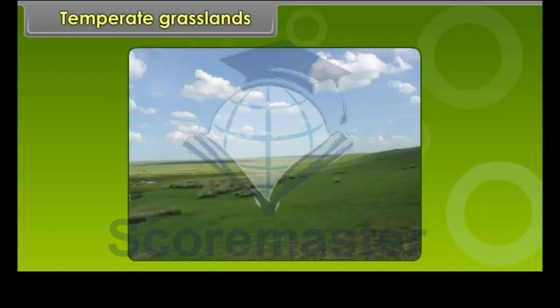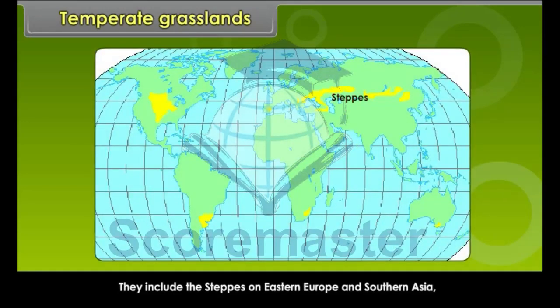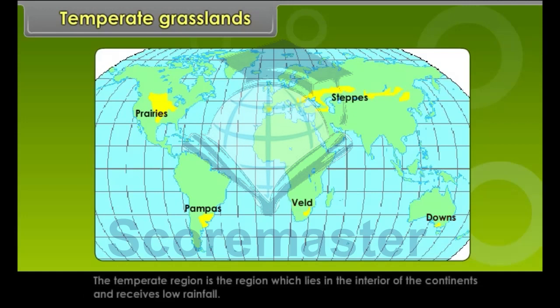The Temperate Grasslands are known by different names in different continents. They include the steppes of Eastern Europe and Southern Asia, the Prairies of North America, the Pampas of Argentina, the Downs of Australia, and the Veld of South Africa. The Temperate Region lies in the interior of the continents and receives low rainfall.